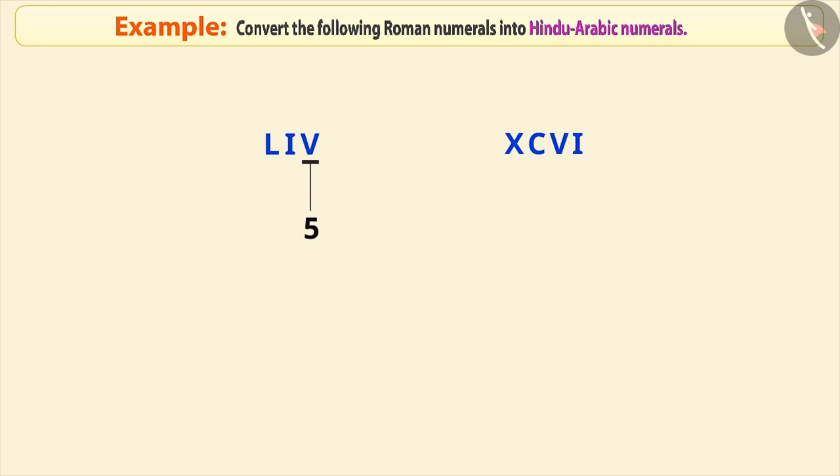This symbol represents 5 and next symbol represents 1. Since this symbol is written before the symbol of larger value, it must be subtracted. The next symbol towards left is of larger value, so it must be added. Therefore, the result is 54.